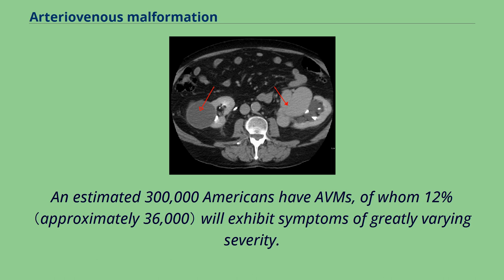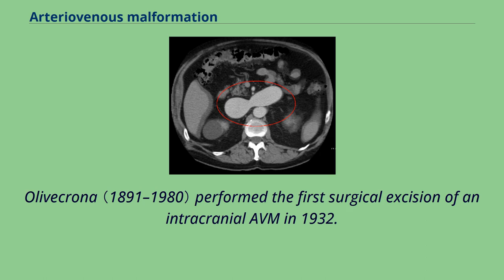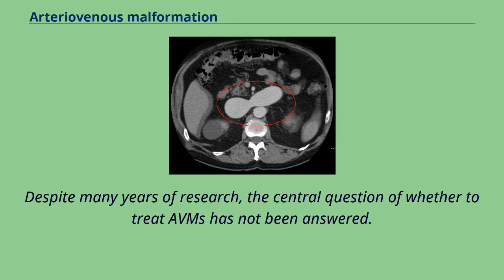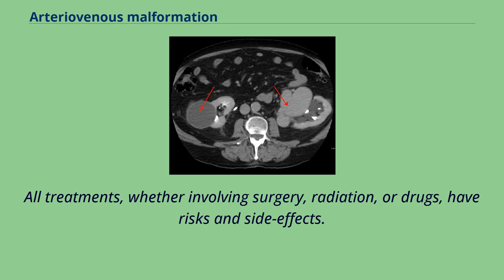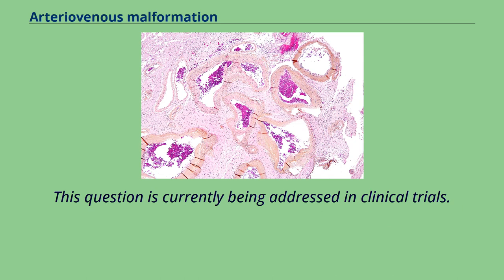Lushka and Virchow first described arteriovenous malformations in the mid-1800s. Olivecrona performed the first surgical excision of an intracranial AVM in 1932. Despite many years of research, the central question of whether to treat AVMs has not been answered. All treatments, whether involving surgery, radiation, or drugs, have risks and side effects. Therefore, it might be better in some cases to avoid treatment altogether and simply accept a small risk of coming to harm from the AVM itself. This question is currently being addressed in clinical trials.